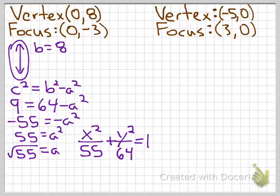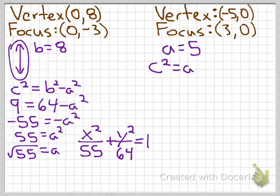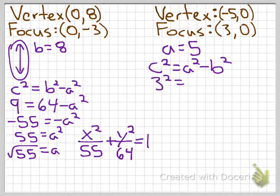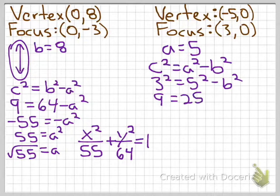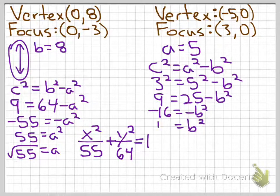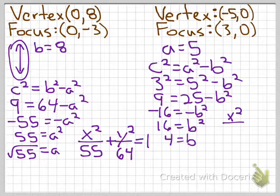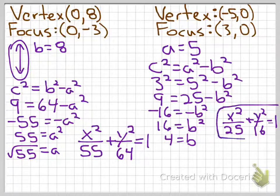For the last example, we're given the vertex at (−5, 0) and the focus at 3. Right away, a is 5 since the vertex is on the x-axis. Using c squared equals a squared minus b squared: 3 squared equals 5 squared minus b squared gives 9 equals 25 minus b squared, so b squared equals 16 and b equals 4. The equation is x squared over 25 plus y squared over 16 equals 1.